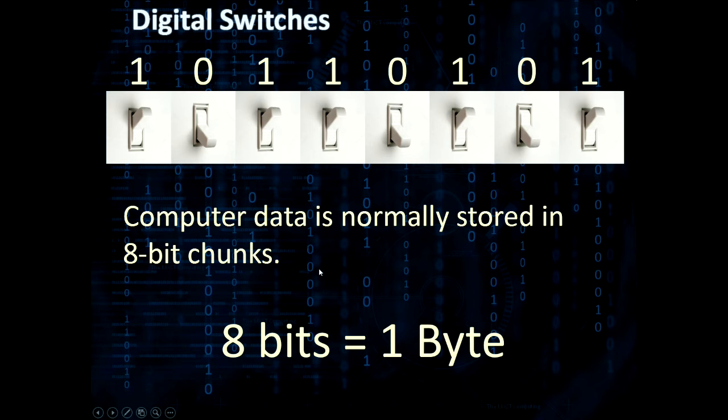Data on computers is normally stored in eight-bit chunks, and we call those eight bits a byte. And you'll have heard of that as well in things like kilobytes, megabytes, gigabytes, terabytes and so on.